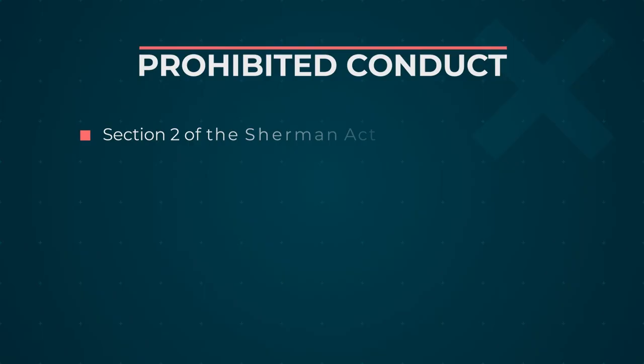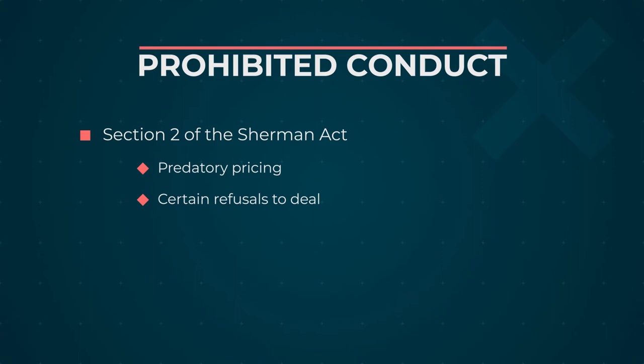There's Section 2 of the Sherman Act, which prohibits monopolization and attempts to monopolize. Under Section 2, predatory pricing — pricing below cost to eliminate a competitor — is prohibited. Certain refusals to deal are prohibited. And a number of rule of reason offenses taken by monopolists, such as exclusive dealing by a monopolist, can also be prohibited under Section 2. There's also a statute called the Robinson-Patman Act, which is rarely enforced and only enforced these days by private parties, that prohibits certain types of price discrimination among customers.